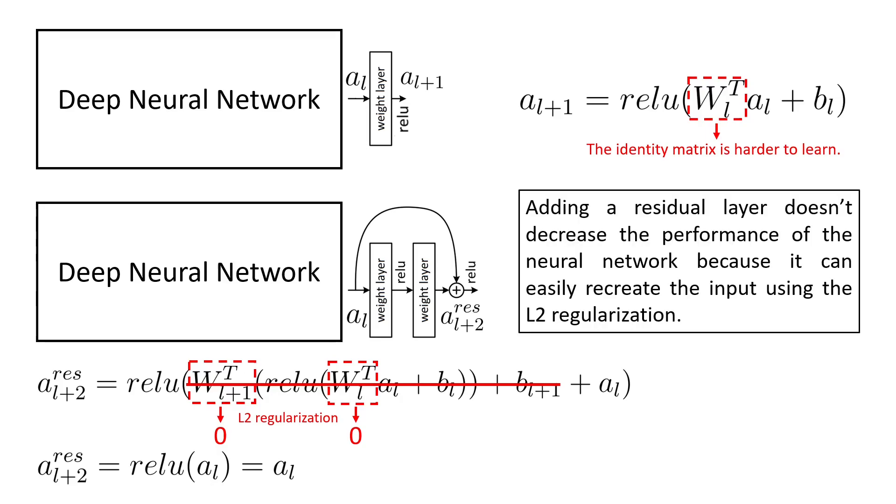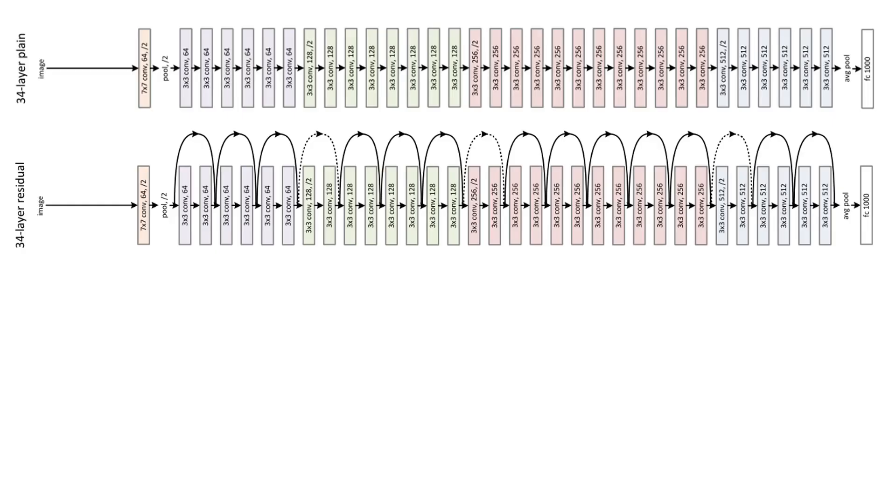So adding a residual layer doesn't decrease the performance of a neural network because it can easily recreate the input using the L2 regularization. However, not decreasing the performance is not enough. We want to actually improve the performance of the network.